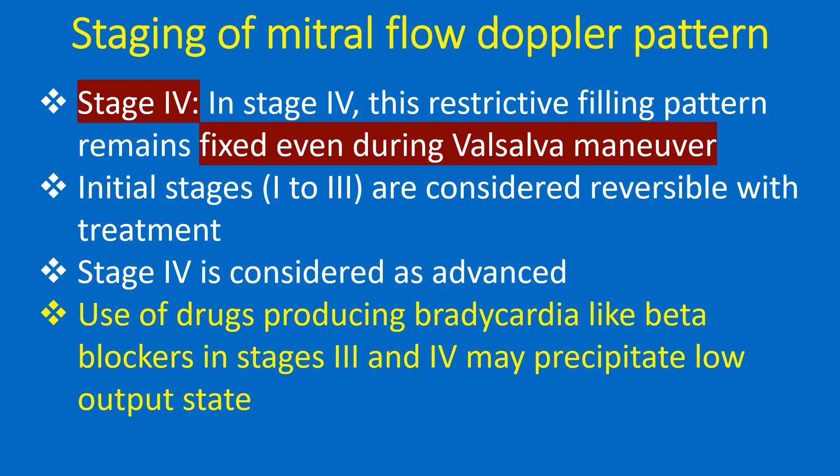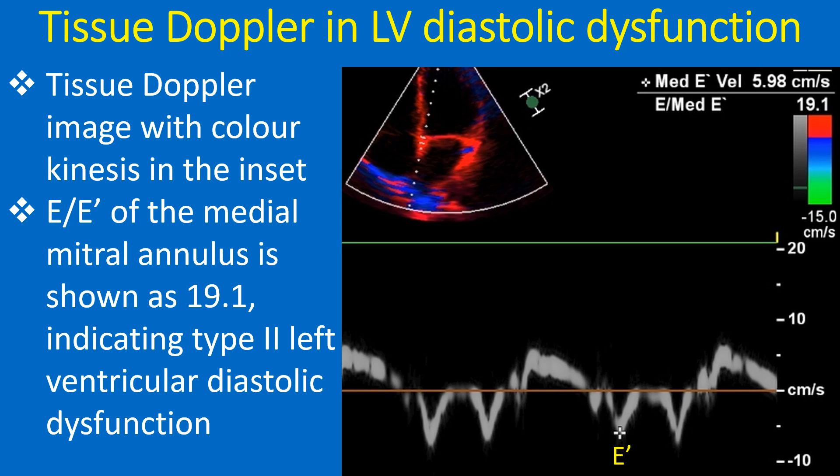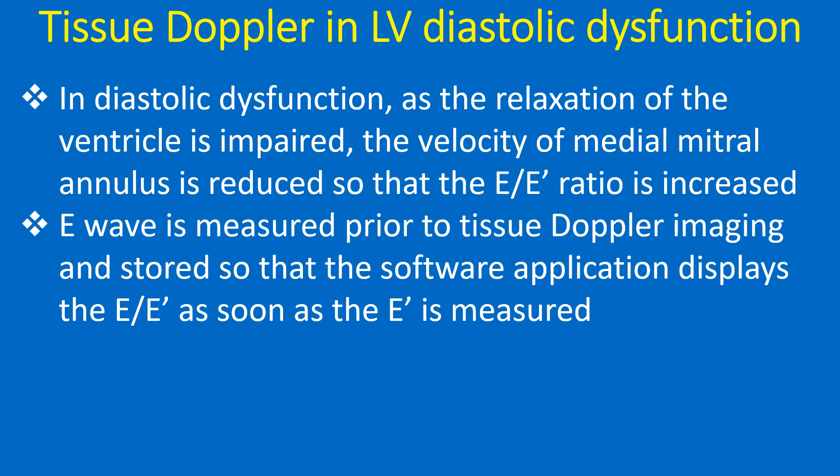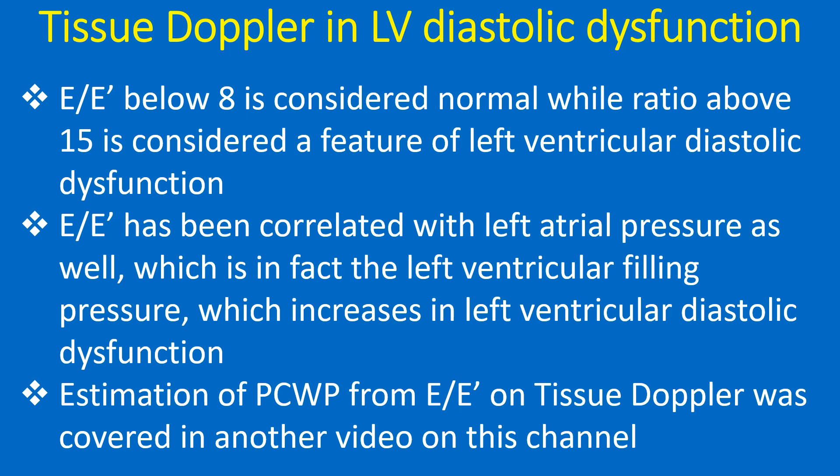Tissue Doppler imaging with colour kinesis is shown in the inset. The E-by-E prime of the medial mitral annulus is shown as 19.1, indicating Type 2 left ventricular diastolic dysfunction. In diastolic dysfunction, as relaxation of the ventricle is impaired, the velocity of the medial mitral annulus is reduced and the E-by-E prime ratio is increased. The E-wave is measured prior to tissue Doppler imaging and stored, so that the software displays the E-by-E prime as soon as E-prime is measured. E-by-E prime below 8 is considered normal, while a ratio above 15 is considered a feature of left ventricular diastolic dysfunction, and has also been correlated with elevated left atrial filling pressure.